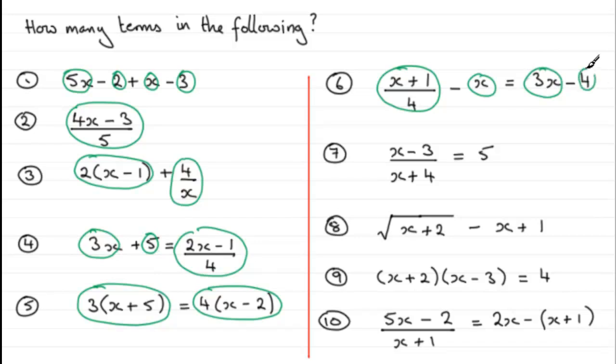Number seven, an equation again where we've got one term here. The division, remember, wraps this all up as one term. Equals, on the right-hand side one other term.